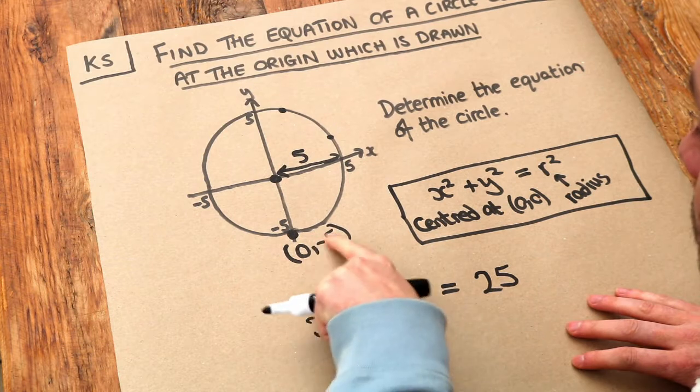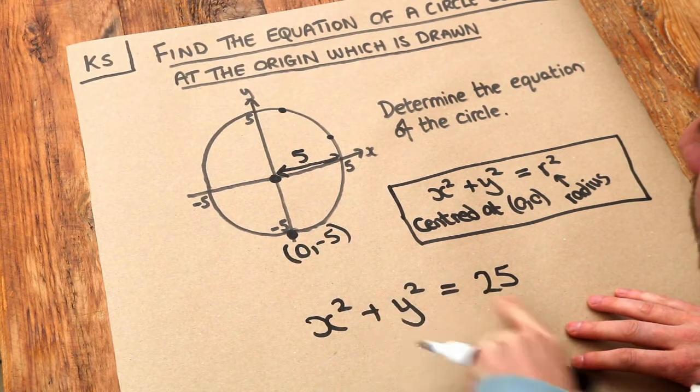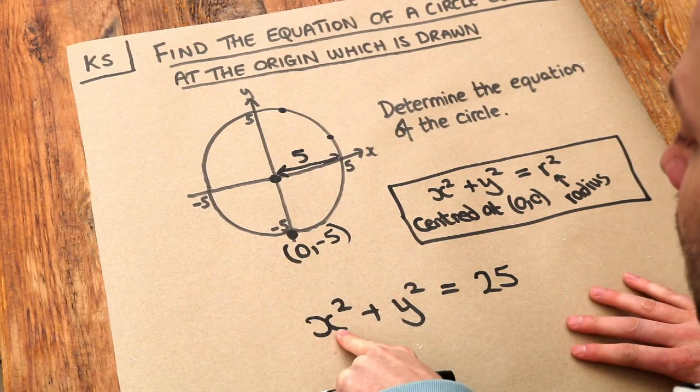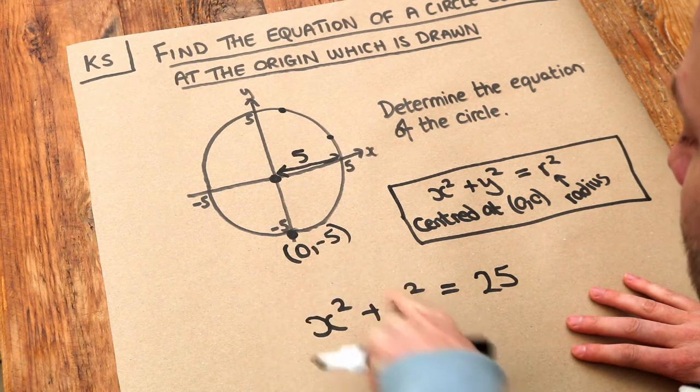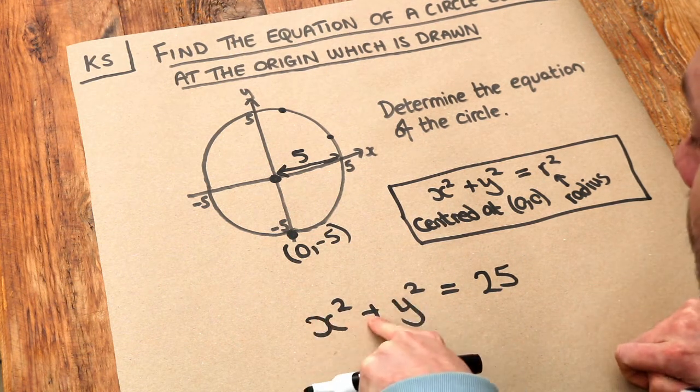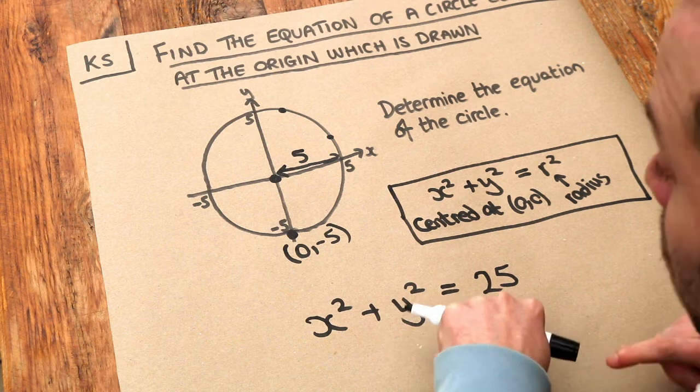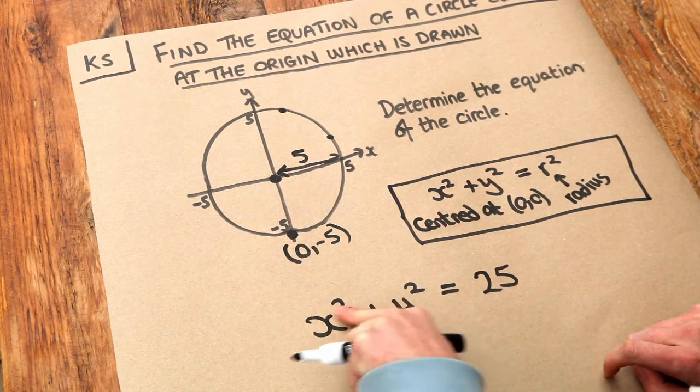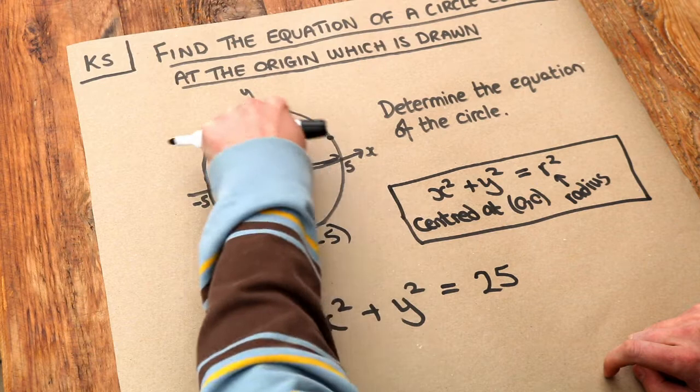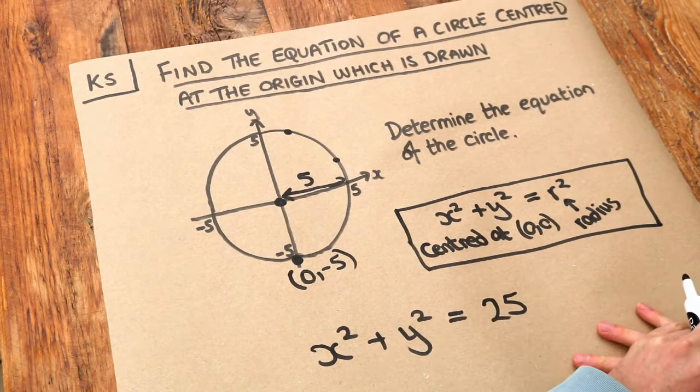If we substitute these values into this equation, does it obey the equation? Well, 0 squared is 0, minus 5 squared is positive 25. 0 plus 25 equals 25, so it works. This point is on the circle, and any point we pick on the circle will satisfy this particular equation.